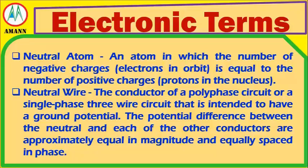Neutral Wire: a conductor of a polyphase circuit or a single-phase three-wire circuit that is intended to have a ground potential. The potential difference between the neutral and each of the other conductors are approximately equal in magnitude and equally spaced in phase.